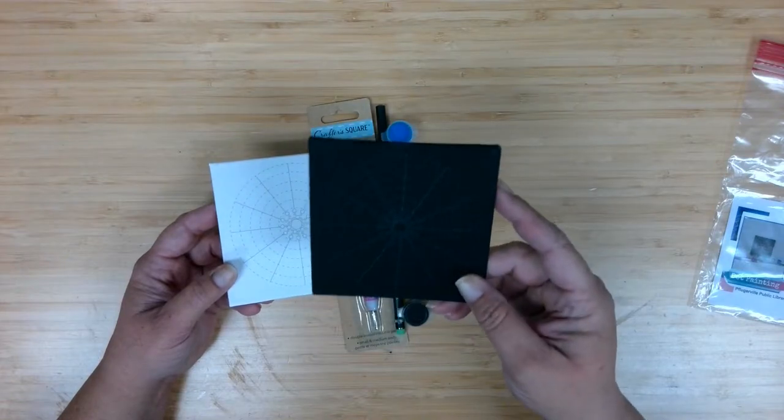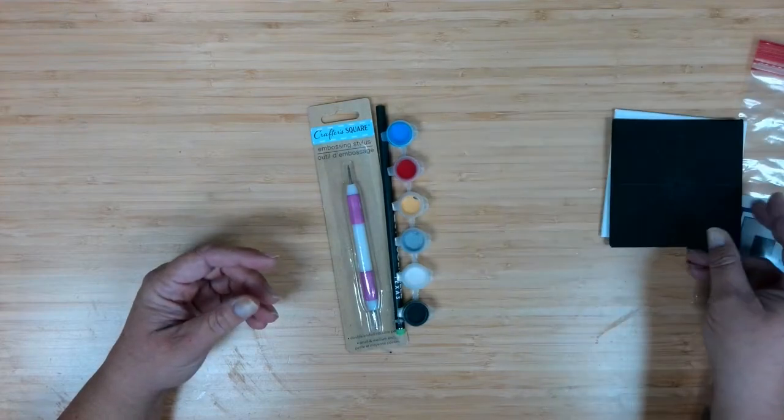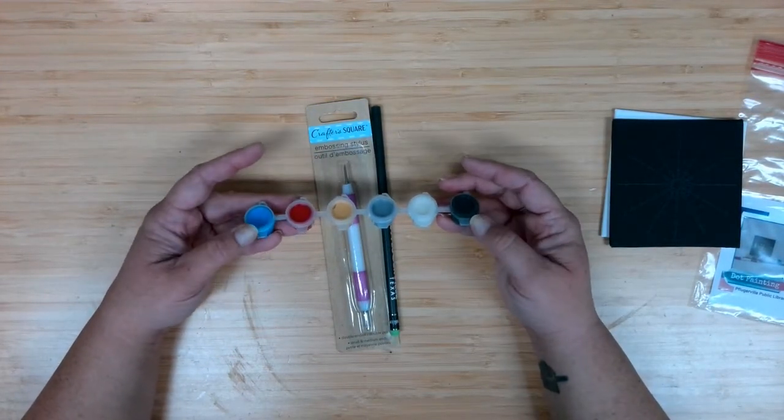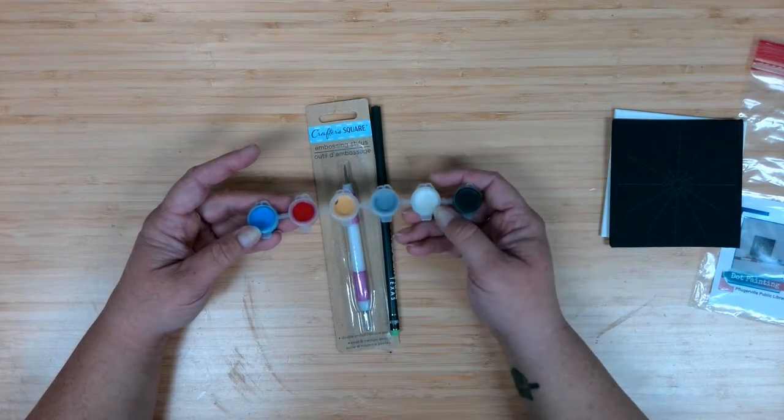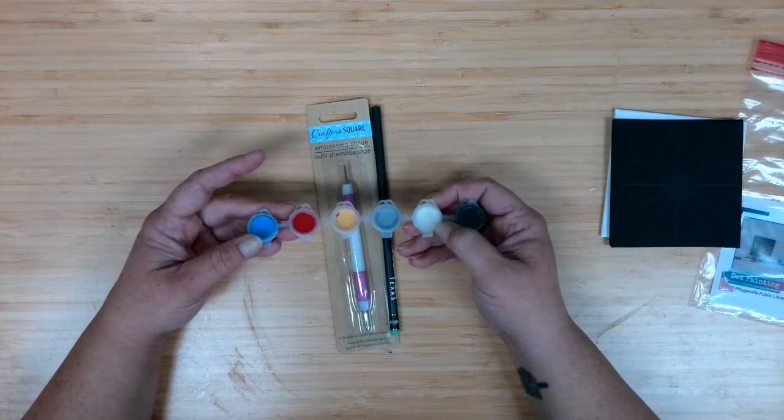The canvases have markings on them to help guide when you are doing your dot painting. It's a little harder to see on the black canvas, but it is there. Additionally, we have a six paint pot set here for you. Black and this color actually isn't a white, it's more of a color changing, almost top coat.